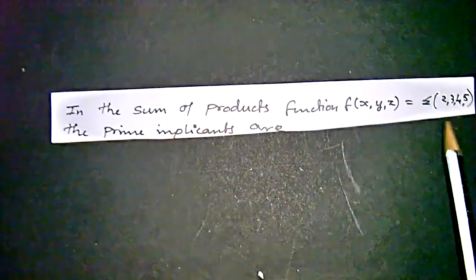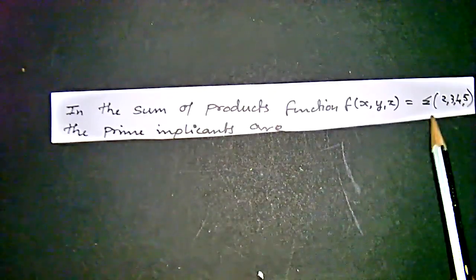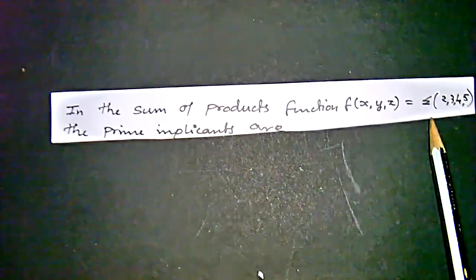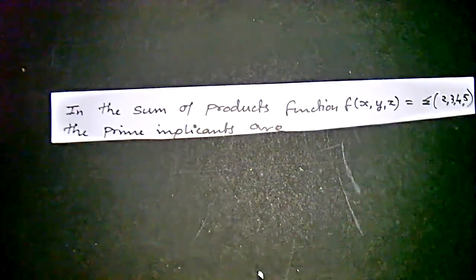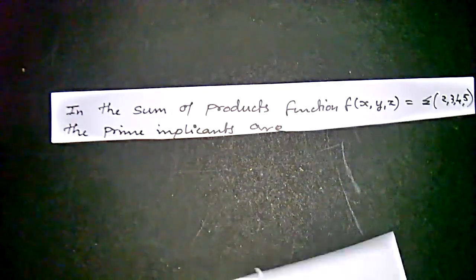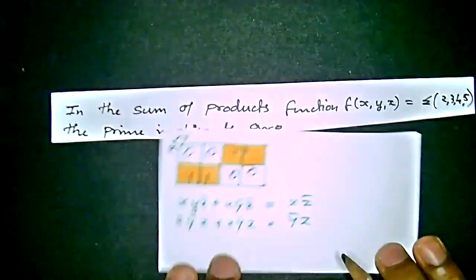We have to be aware of that summation and pi also in between that. The prime implicants are - they are asking the prime implicants. What are the prime implicants? First of all, we go for the truth table directly.